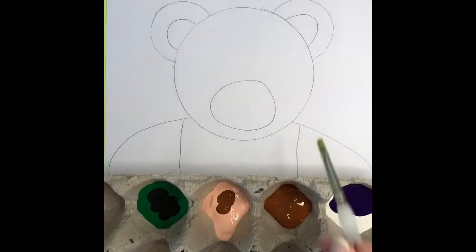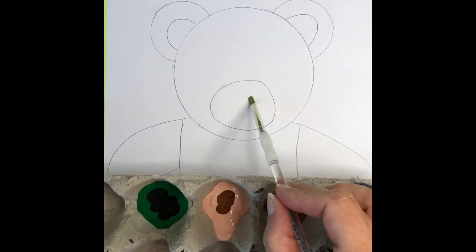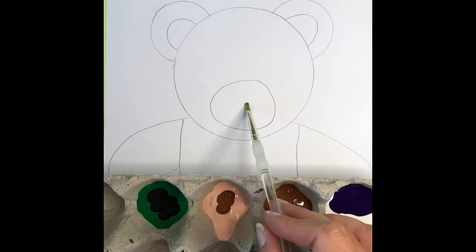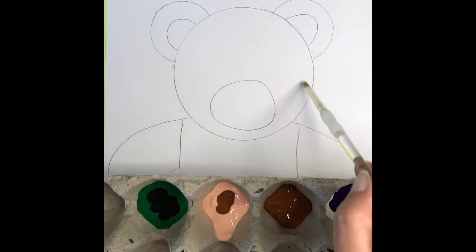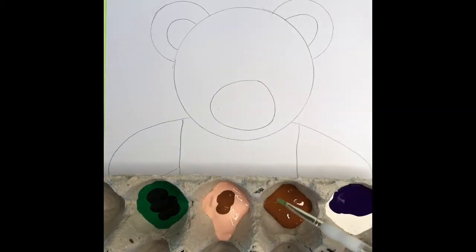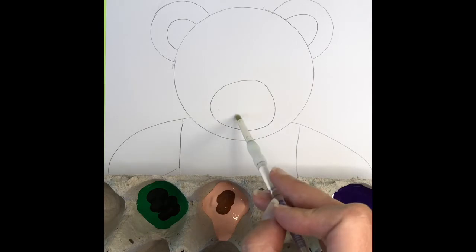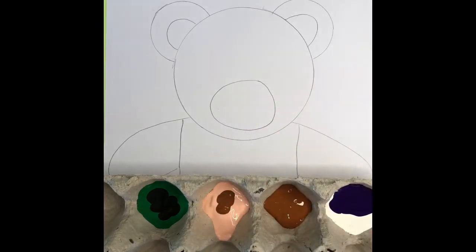We're going to paint the inside of his ears and his nose the same color. Now you'll want to choose a color that's lighter than the color of your animal. So I'm going to be painting a bear and I'm going to paint him brown. So planning ahead, I'm going to make a lighter color for the nose and the inside of the ears. So I took peach and I mixed it with just a little bit of brown.